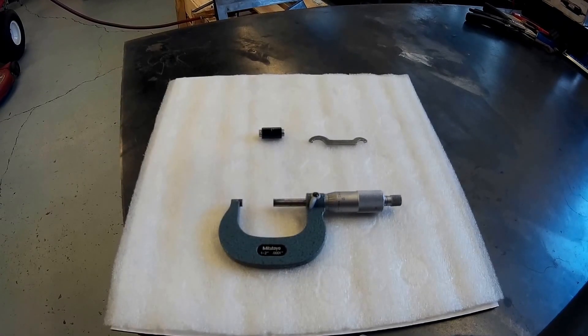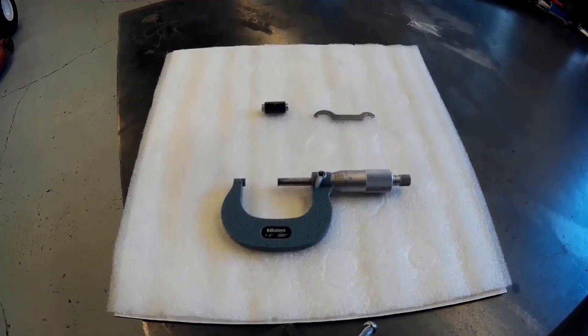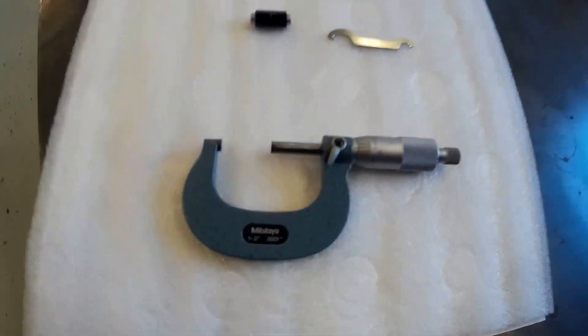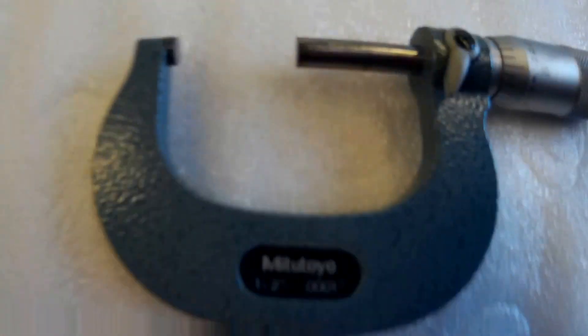Okay, I'm going to show you a fast and easy way to calibrate a set of Mitutoyo 1 to 2 inch micrometers with the thumb ratchet.